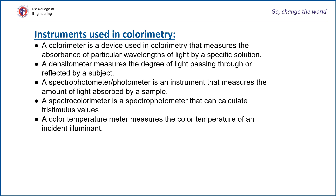There are different types of devices in colorimetry: a colorimeter that measures the absorbance of a particular wavelength of light by a specific colored solution; a densitometer which measures the degree of light passing through or reflected by a subject; and a spectrophotometer which measures the color temperature of an incident illuminant.